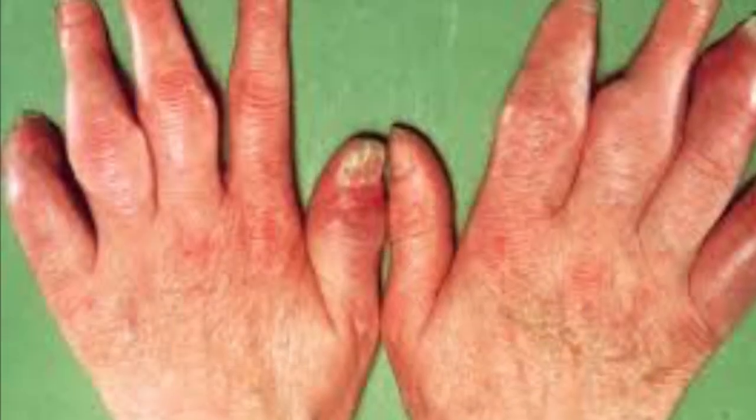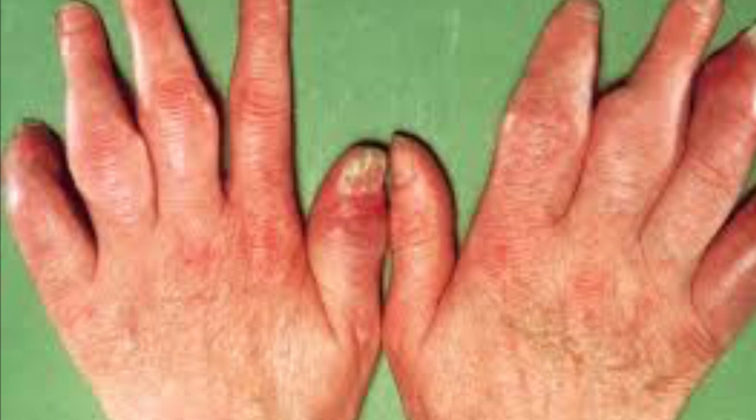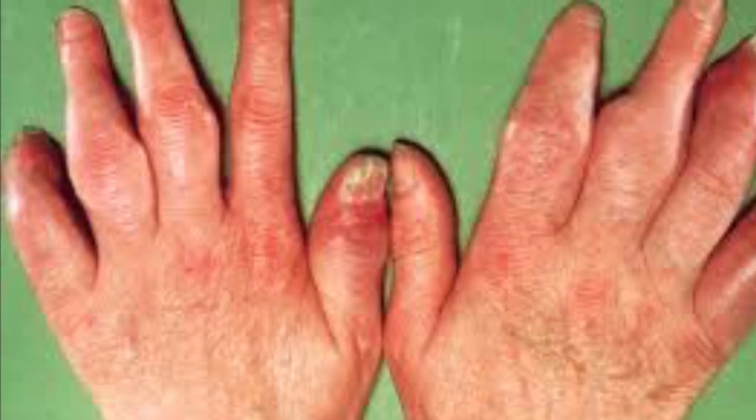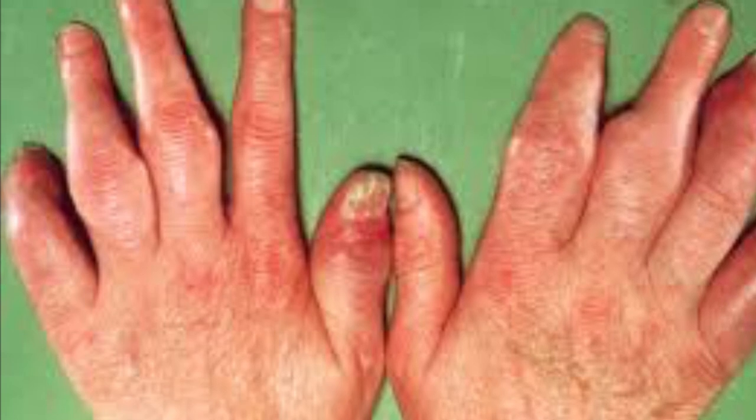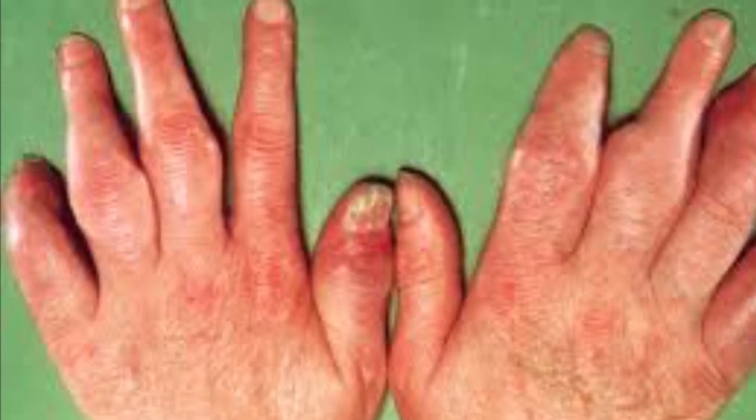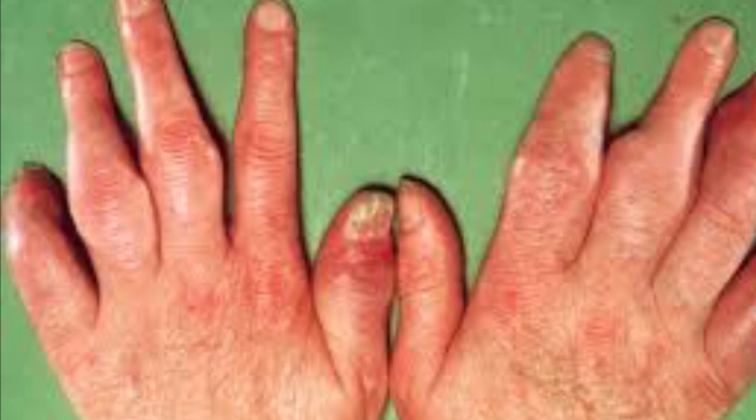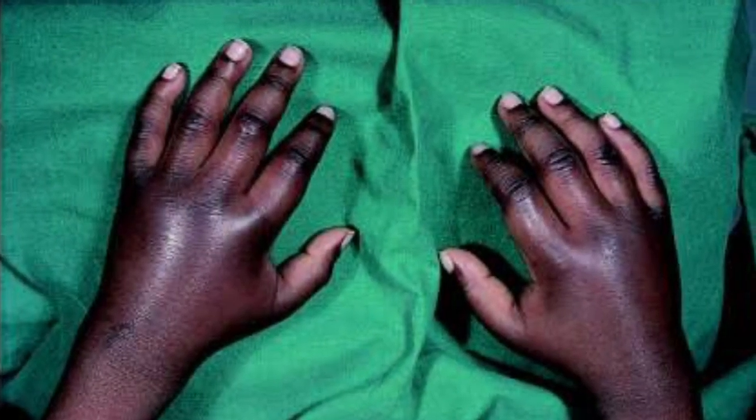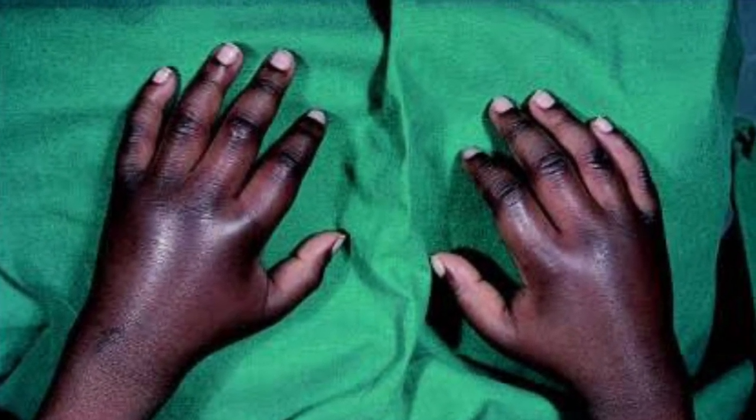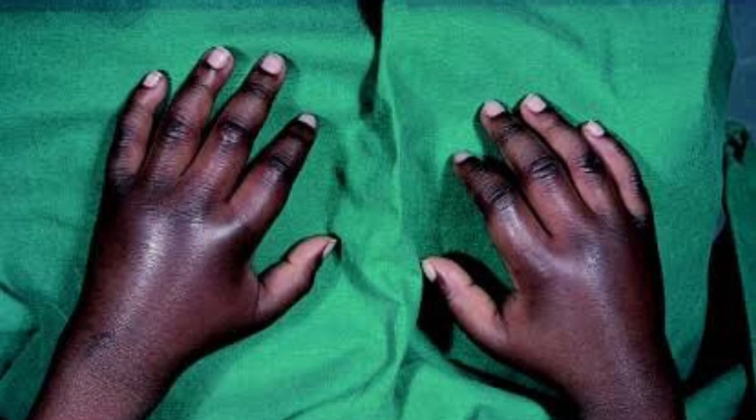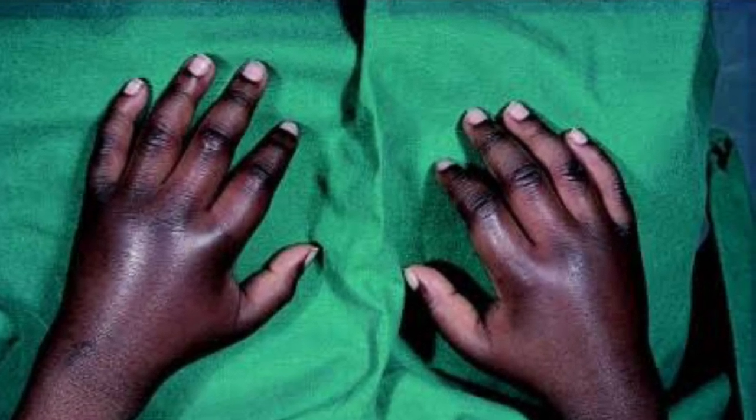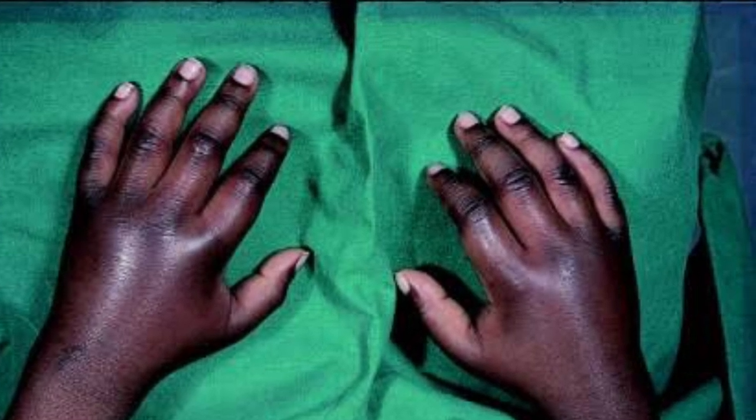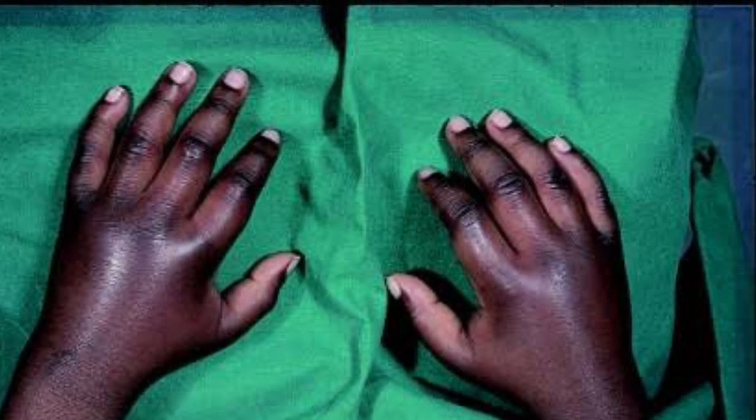Clinical features of sickle cell anemia are mainly due to vaso-occlusive crisis, more than its hemolytic feature. Due to vaso-occlusion, the most common clinical feature is dactylitis. What is dactylitis? It is shown here. It's the swollen, painful, tender joints of the hands and feet, basically small joints. So a child with dactylitis, you must think of sickle cell anemia.